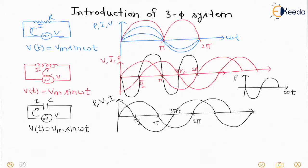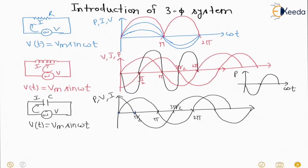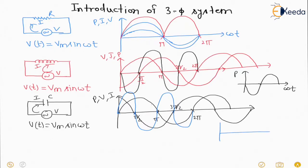Now I am drawing the graph of power. From 0 to π/2, both are positive so power is positive. From π/2 to π, current is negative and voltage is positive, so power is negative. From π to 3π/2, both are negative so power is positive, then negative, then positive again. In the first half, the capacitor is taking active power from the source; in the second half it is delivering power to the source. So the overall active power absorbed by the capacitor is zero.